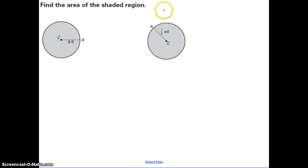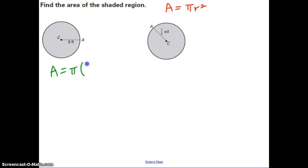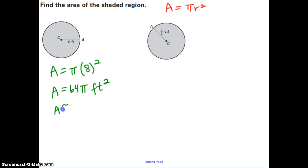Here we want to find the area of the shaded region. In both examples, the shaded region is the entire circle, so we use A equals pi R squared. For the first example, the radius is 8, so A equals pi times 8 squared equals 64 pi. You can leave your answer in terms of pi — 64 pi feet squared — or multiply it out: approximately 201.1 feet squared.